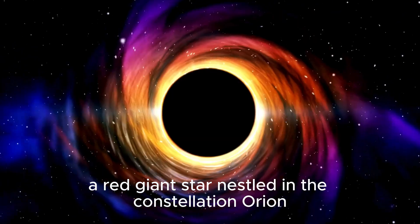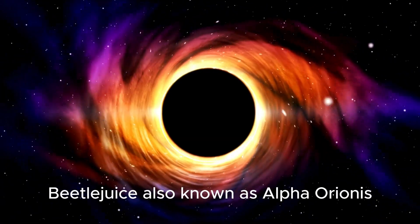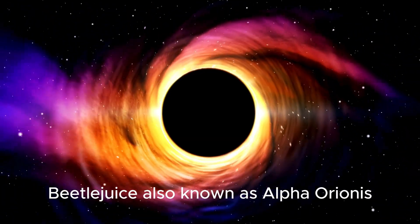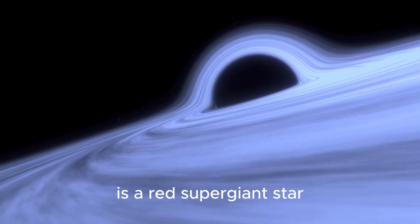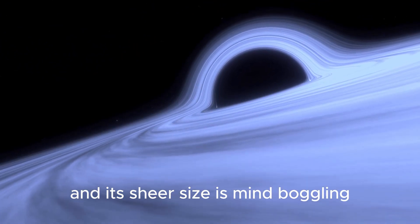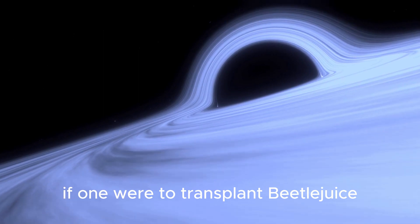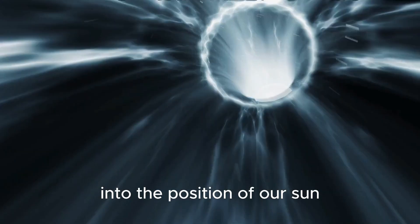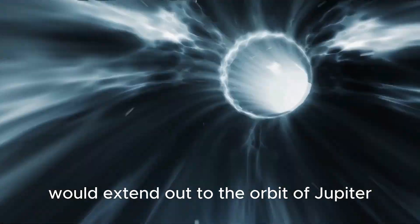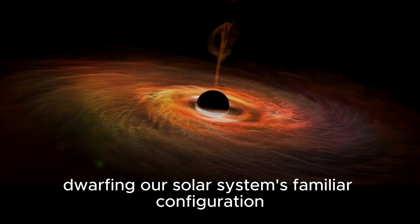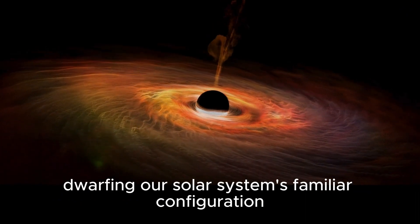Betelgeuse is a red giant star nestled in the constellation Orion, also known as Alpha Orionis. It is a red supergiant star, and its sheer size is mind-boggling. If one were to transplant Betelgeuse into the position of our sun, its expansive reach would extend out to the orbit of Jupiter, dwarfing our solar system's familiar configuration.